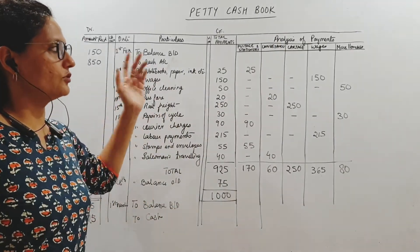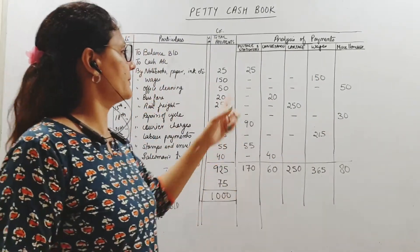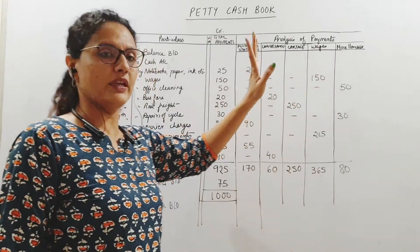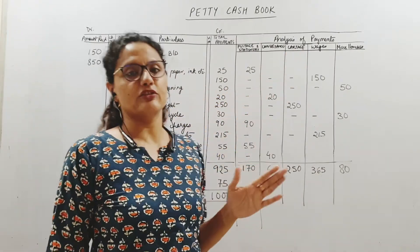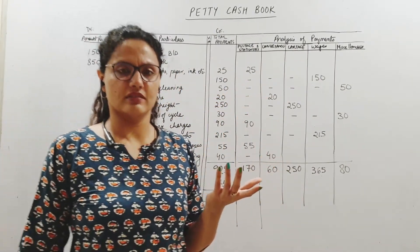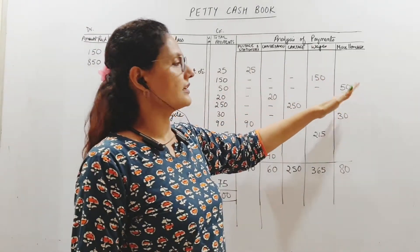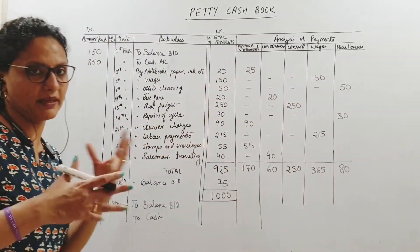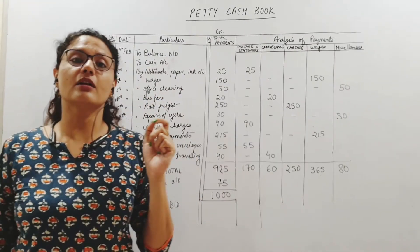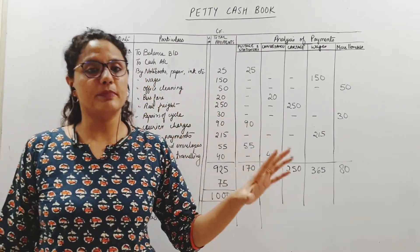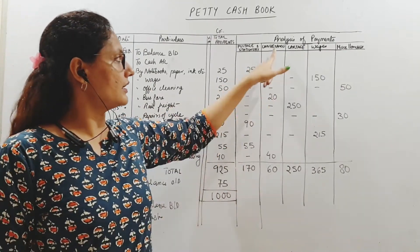Wages were paid — wages is a regular recurring expense paid on a day-to-day basis, so 150 goes under wages. Then we paid for office cleaning — we don't have a special account for it because it's occasional. Those expenditures without a recurring nature go into the miscellaneous column. Bus fare is paid for a person to travel — when paid for people it is called conveyance — so 20 rupees goes under conveyance.